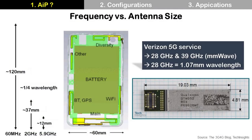Why? This is the relationship between operation frequency and antenna size. Antenna size is about a quarter of the wavelength. Higher frequency means shorter wavelength, so a smaller antenna is used for higher frequency. This means a 5G antenna is small enough to be integrated in a package.